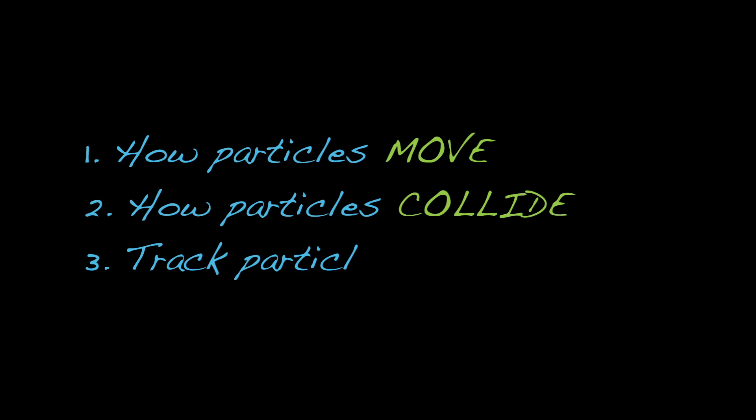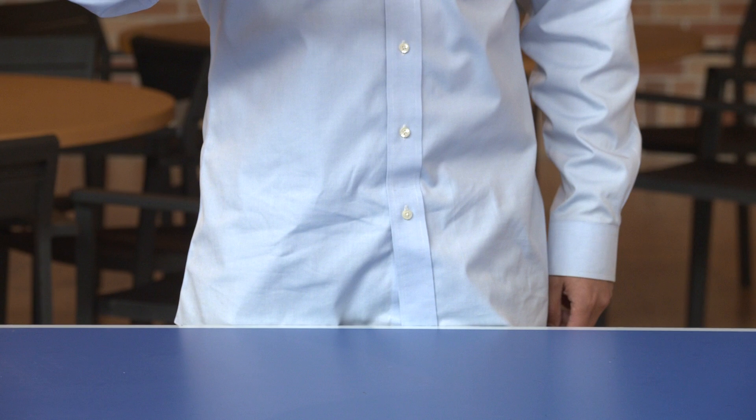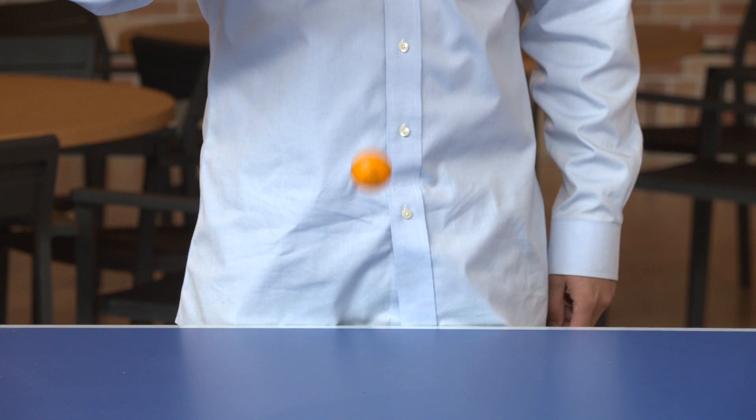The final step to complete our particle simulator is to develop a method to track particle motions forward in time. That's how our computer program will animate them, one frame at a time. We said earlier that if you know the equation of motion of each particle, then you can compute the velocities and positions from it. But how exactly?